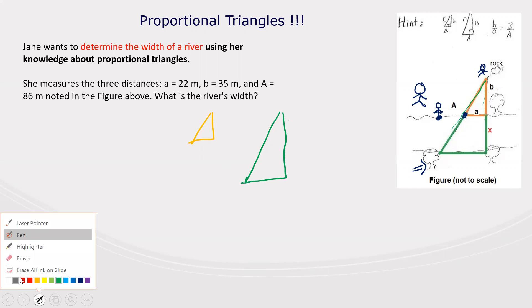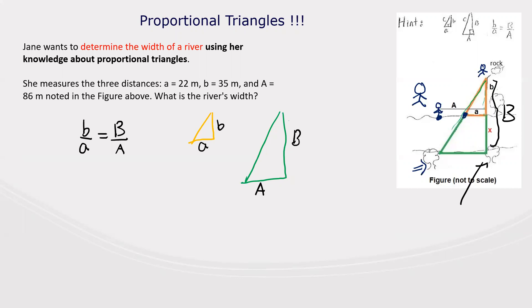If we relate the sides, this will be a and this will be b, and this will be capital A and capital B. Notice capital B is all this. Now she uses proportional triangles and says base over height of the small triangle equals base over height of the big triangle. So big B equals b plus X, where X is the actual width of the river.